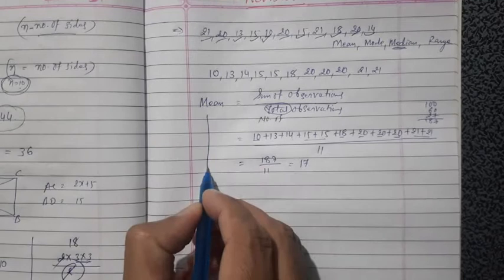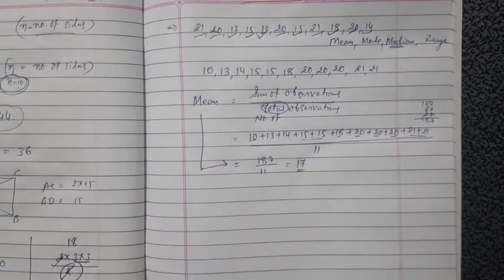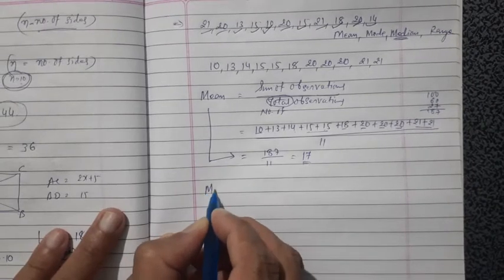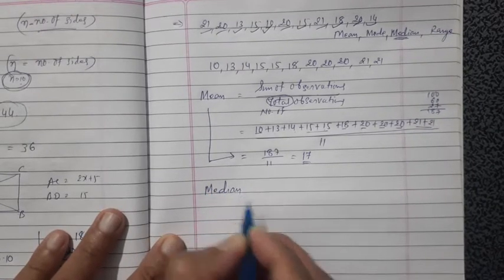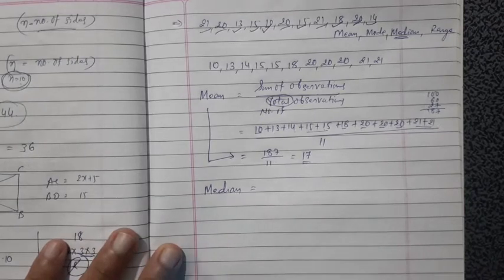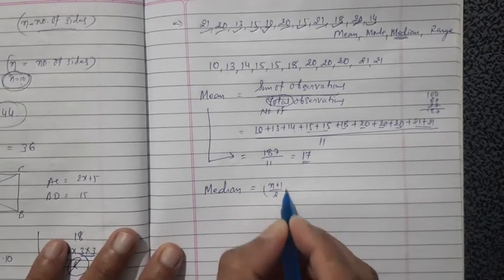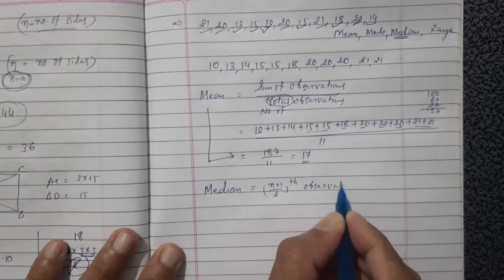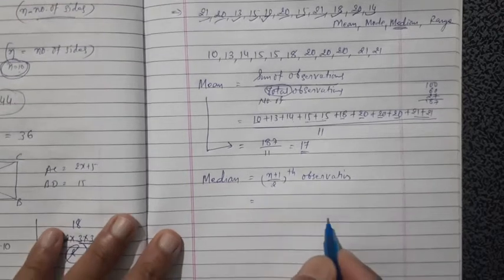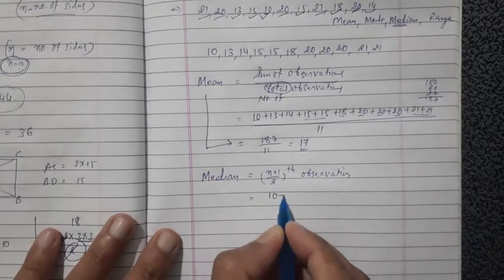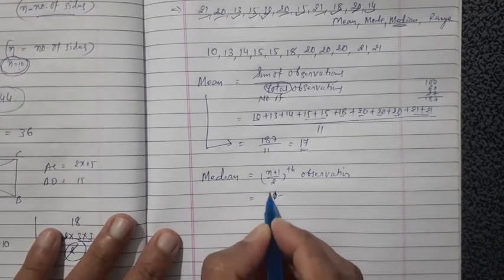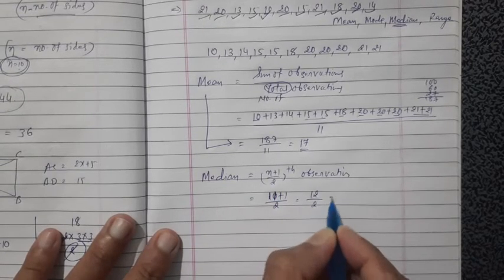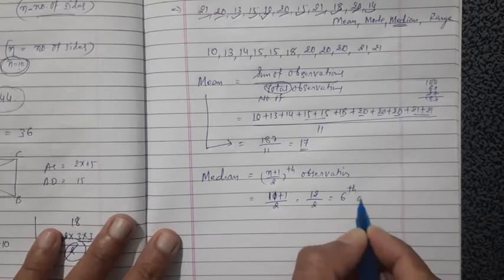So mean equals 17. Next, find the median. The formula is: median equals the ((n+1)/2)th observation. Here n = 11, so (11+1)/2 = 12/2 = 6th observation.